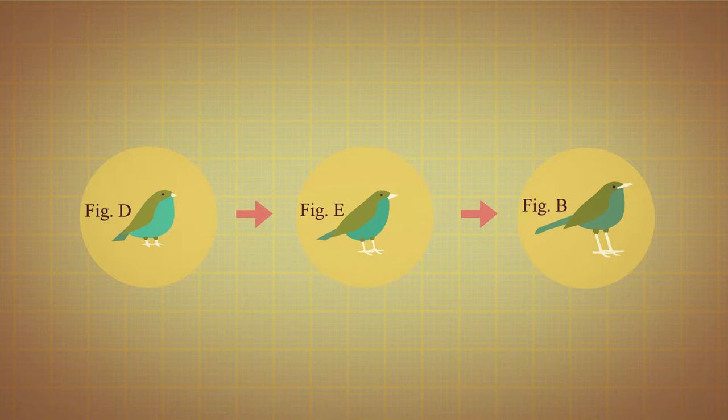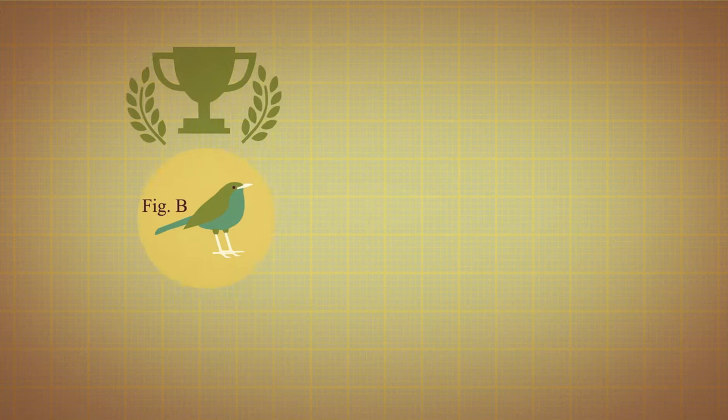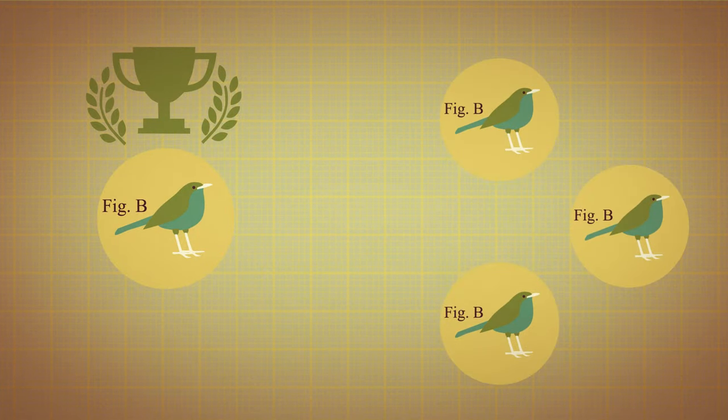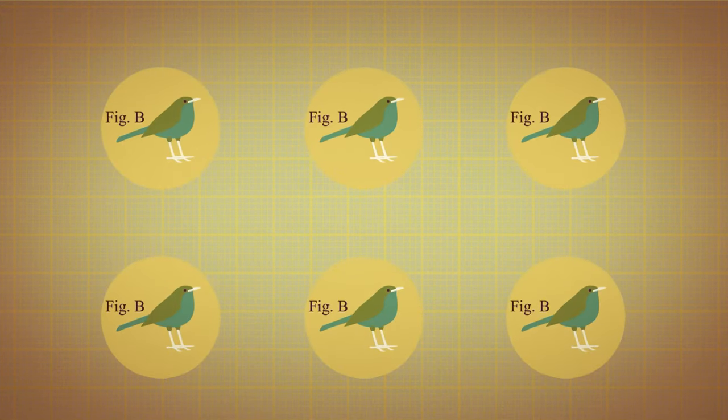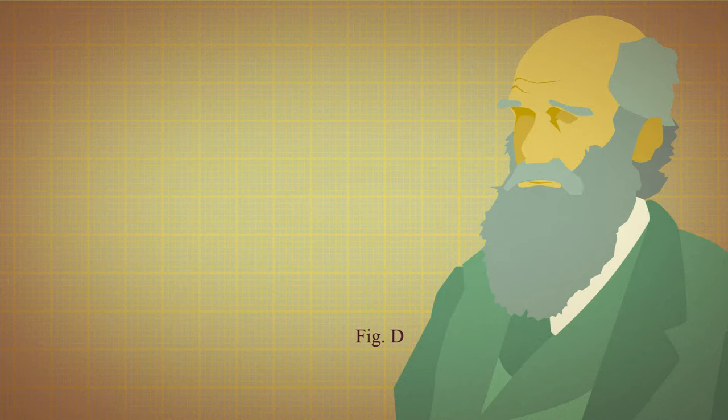He believed that individual members of a species are all slightly different from one another and that those that are best adapted to their habitat will stand a better chance of surviving to reproduce and pass on their beneficial traits to their offspring. Over time, those beneficial traits become more common, allowing that particular species to evolve.